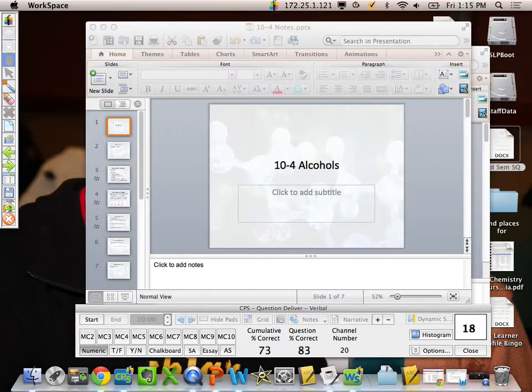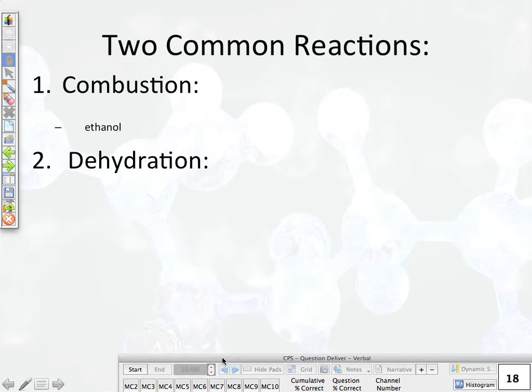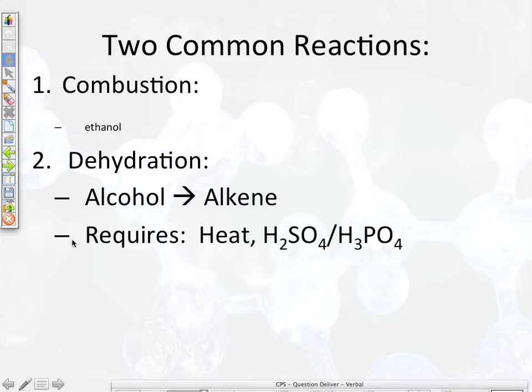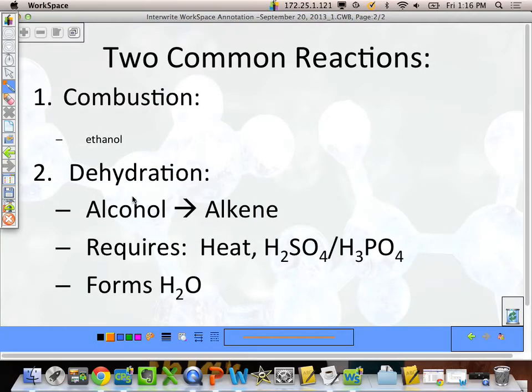What questions do you have before we move on? Cool. So our second type of reaction that alcohols undergo are dehydration reactions. And what happens is an alcohol becomes an alkene. So we go to single bonds with an OH group all of a sudden becoming something that is doubly bonded.